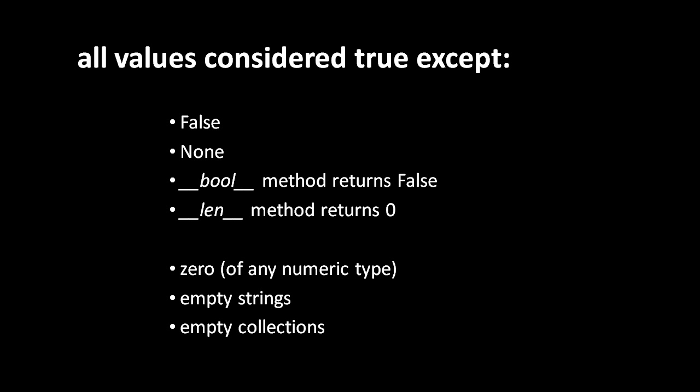If you give your object both the __bool__ and __len__ methods, the __bool__ method is used to determine the truth value instead of __len__.